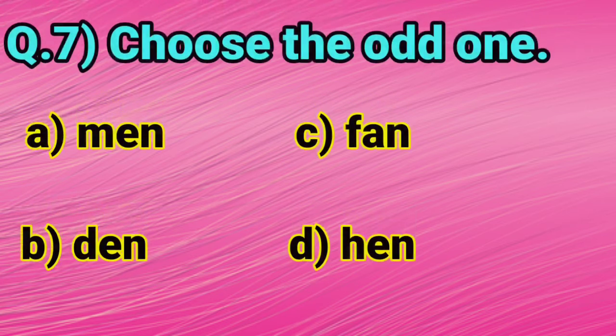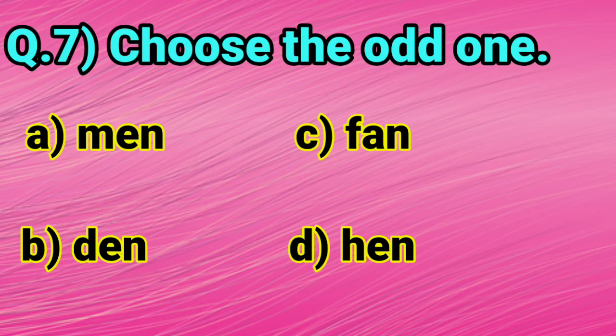Let's do question number 7. Choose the odd one. Dear kids, odd means which is not a part of the group. Read these options one by one.